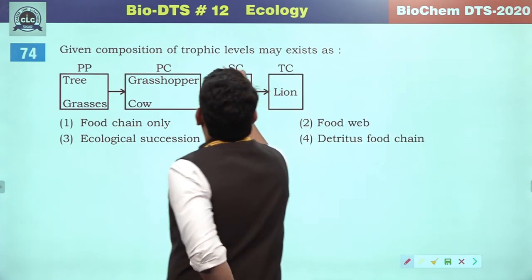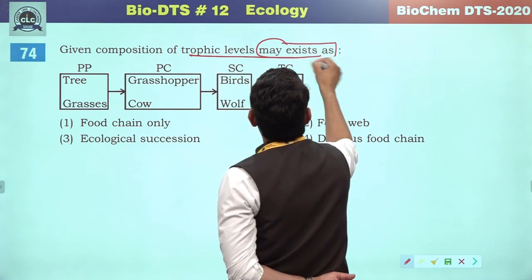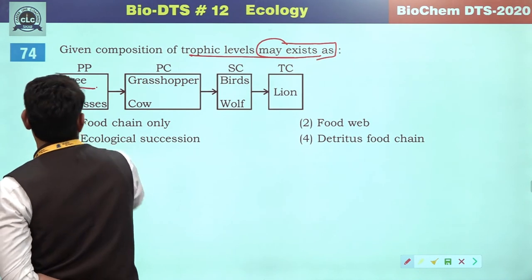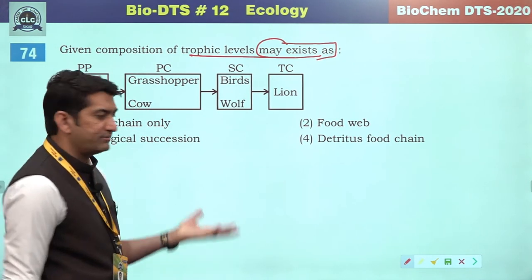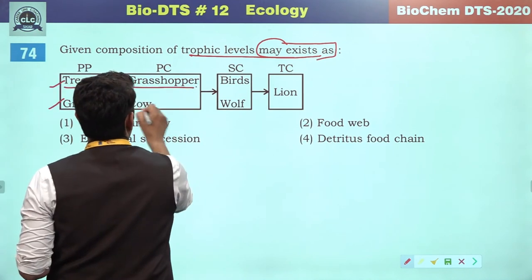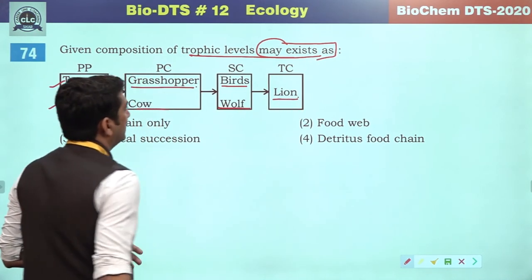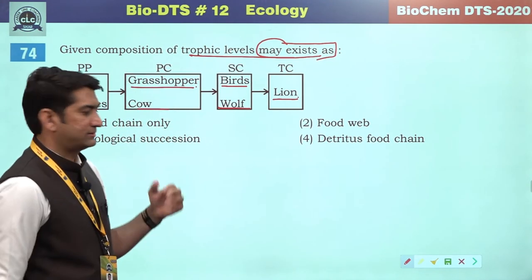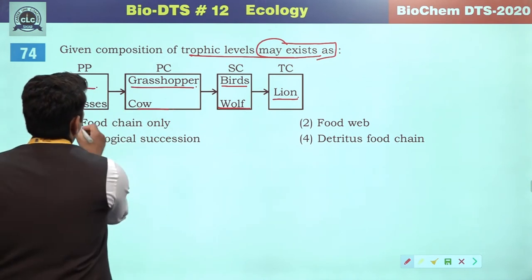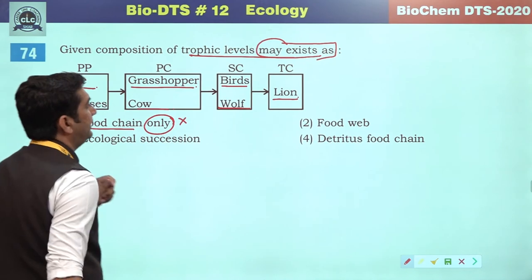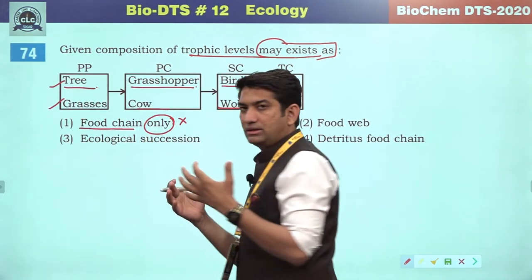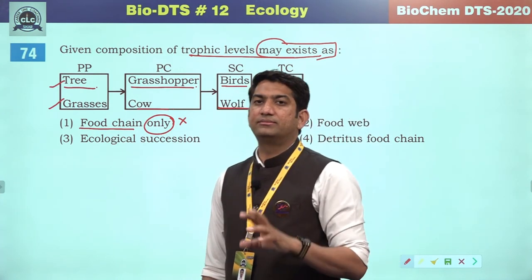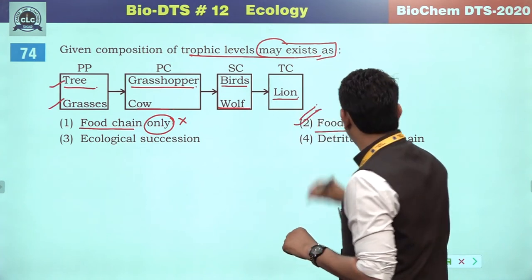Given composition of trophic levels — they may exist as a food chain, but a single food chain alone cannot survive in nature. Living organisms exist in biotic communities, so the food web will be the answer.